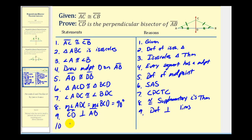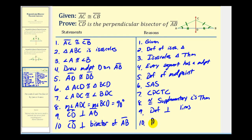We now have enough information to prove that line CD is the perpendicular bisector of AB. We've shown that they intersect and form a right angle, and that segment AD is congruent to segment BD — so it bisects the segment and is perpendicular, making it the perpendicular bisector. This is by definition of perpendicular bisector. And that's going to do it for this proof — I hope you found this helpful.